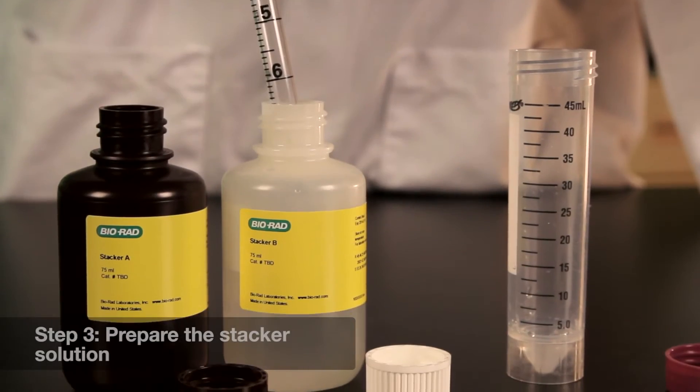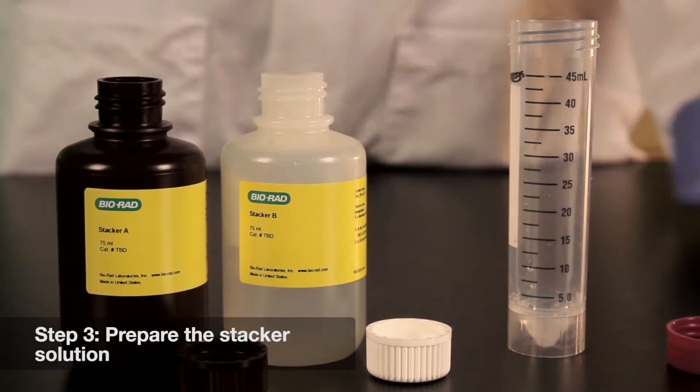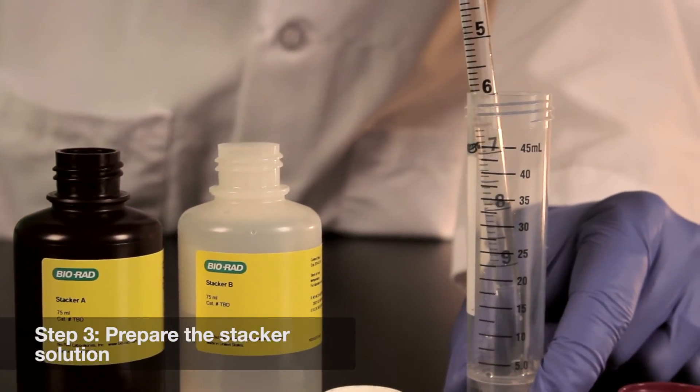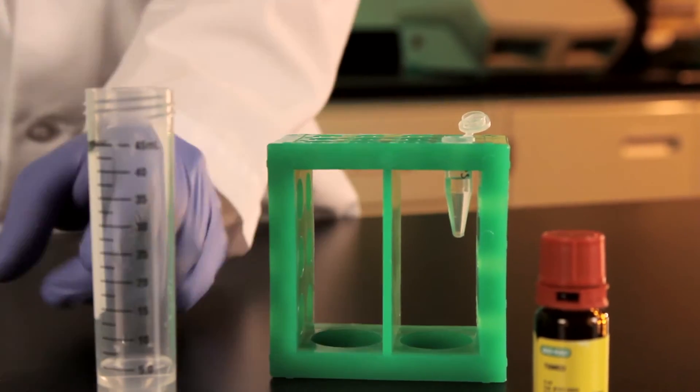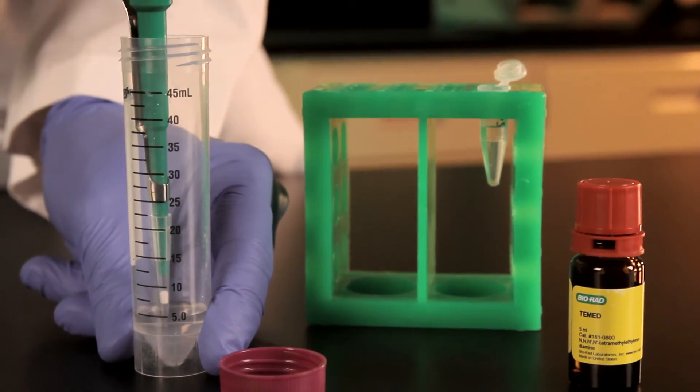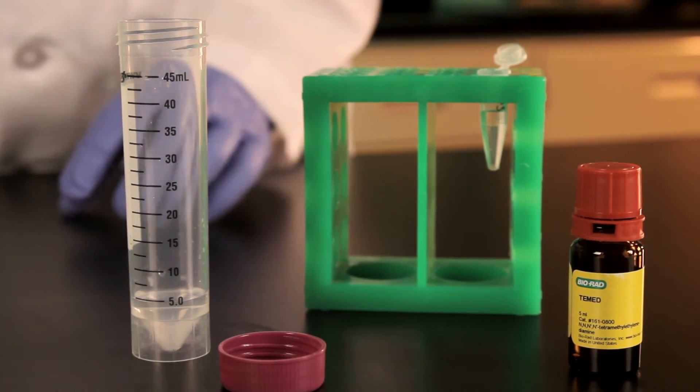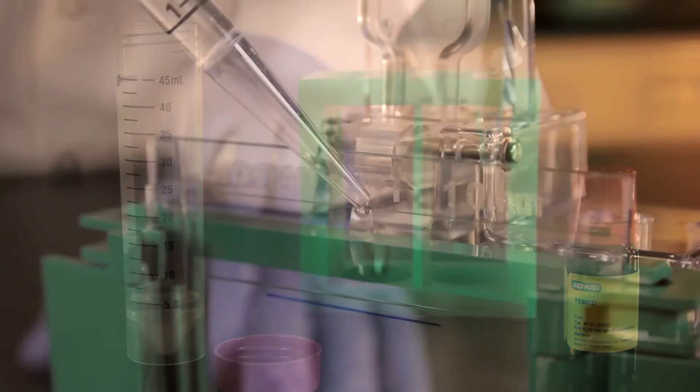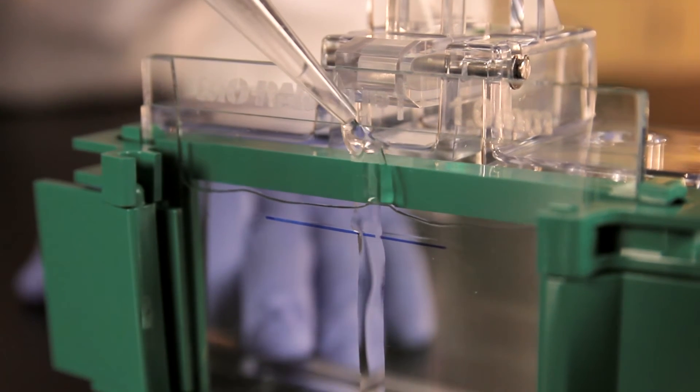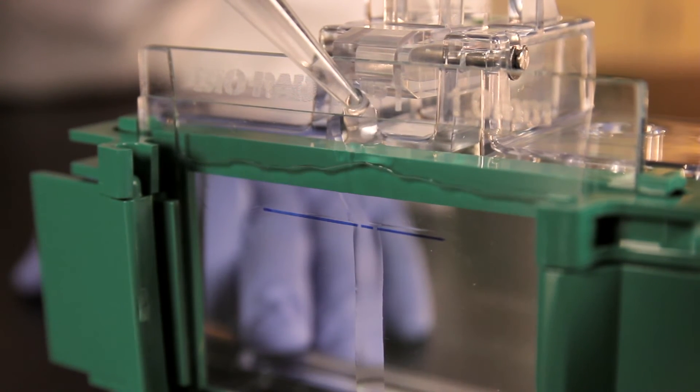Prepare the stacking gel acrylamide solution by combining equal volumes of the stacker A and B solutions. Add the appropriate volumes of TMED and freshly made 10% APS to the combined stacking solution and mix thoroughly, again taking care to avoid introducing air bubbles into the solution. Pour the solution slowly down the middle, completely filling the cassette.